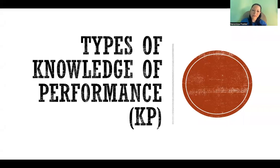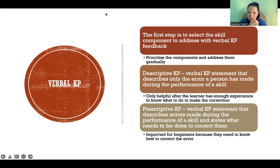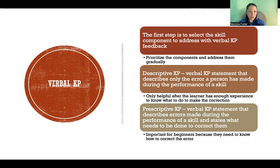Hello. In this video I'm going to talk about the types of knowledge of performance augmented feedback. There are different ways to deliver KPs. We can deliver it verbally, of course. If we're going to deliver verbal KP feedback, it's important that we prioritize the feedback we want to give so that we don't overwhelm the learner. Especially if they're a beginner, they may not be able to receive a large amount of feedback about their performance, or address it, or understand what to do with it.